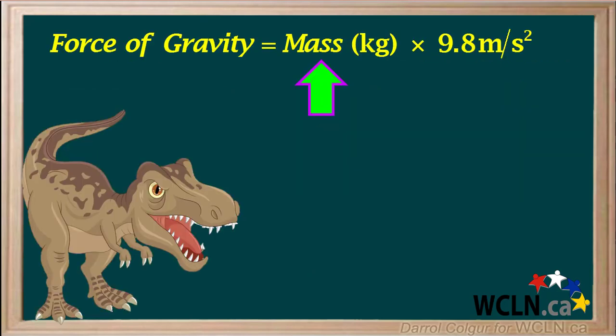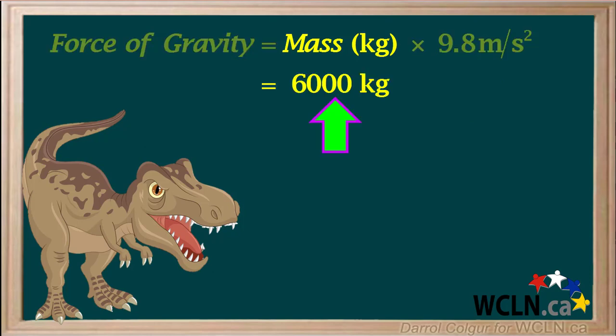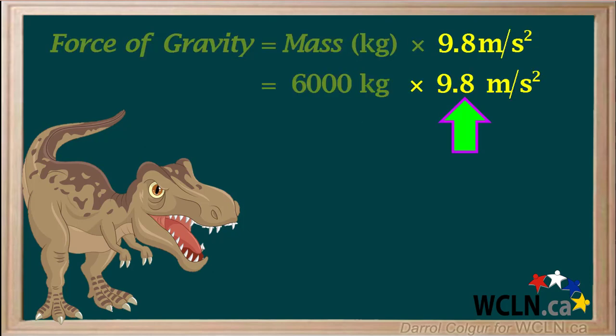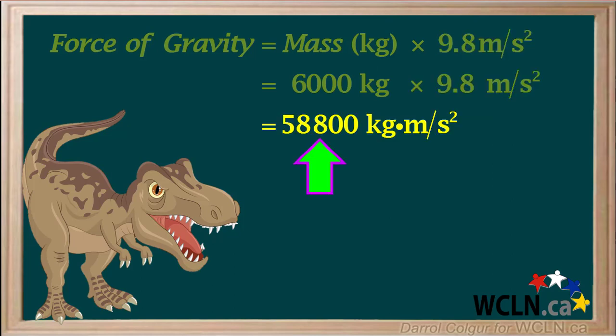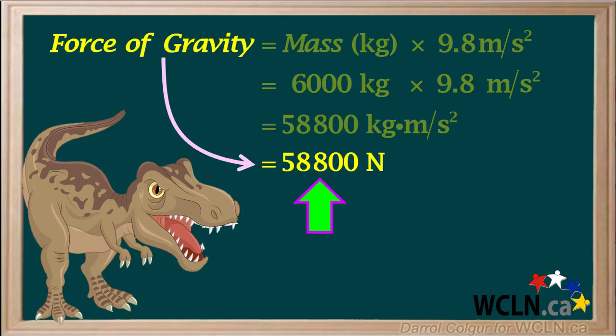Let's calculate the force of gravity on the Tyrannosaurus rex. It is the mass in kilograms times 9.8 meters per second squared, which is 6,000 kg times 9.8 meters per second squared, which comes out to 58,800 kg·m/s², or 58,800 newtons.